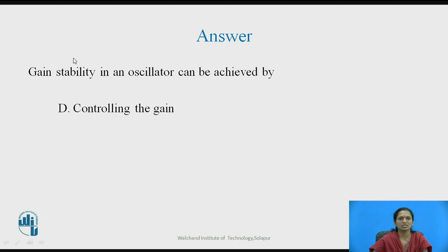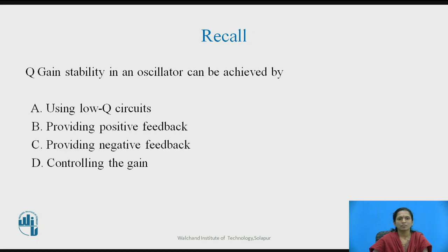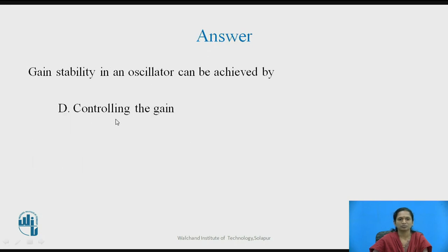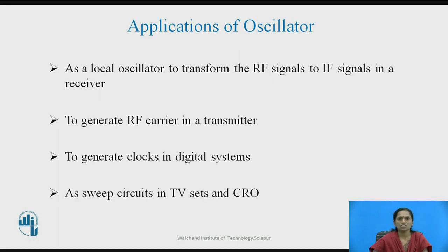Yes, the answer is gain stability in an oscillator circuit can be definitely achieved by controlling gain, by controlling or selecting the components of an amplifier. It is not with any feedback network or with the help of any kind of Q factor or low Q circuits.